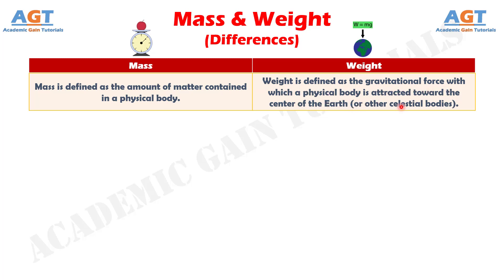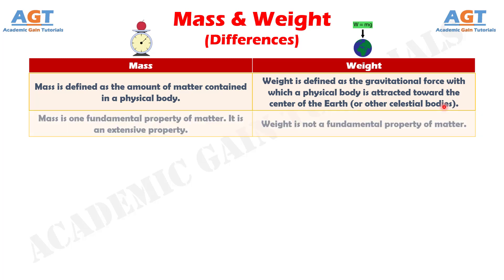Or other celestial bodies. Number 2: Mass is one fundamental property of matter — it is an extensive property — whereas weight is not a fundamental property of matter.